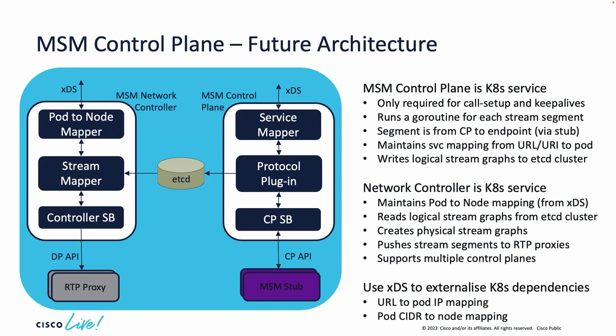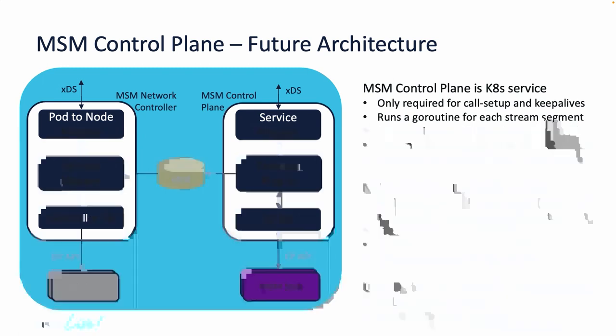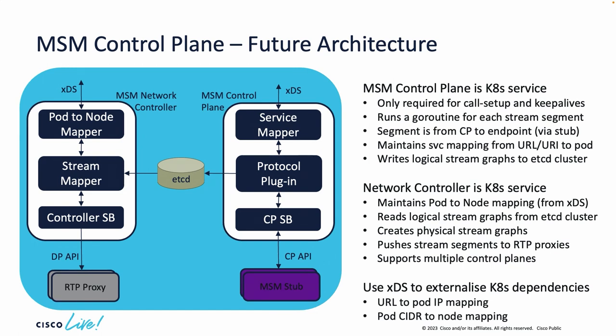We can also use the control plane outside of cloud native deployment. For example, an edge proxy on a customer premise can be controlled through this control plane — we just figure out the mapping. We could say that customer premise uses private IP addresses, but we know the realm they correspond to for that particular customer, and now we can proxy right down at the customer premise.